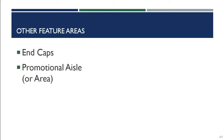Promotional areas and aisles are another type of feature area. Even at Kroger in Milledgeville, they have the manager's special aisle where everything is on deep clearance. At Target, they have their seasonal promotional area set up now for summer. And if you've been into Walmart recently, you might have noticed their garden promotional area completely set up and ready to go for spring.